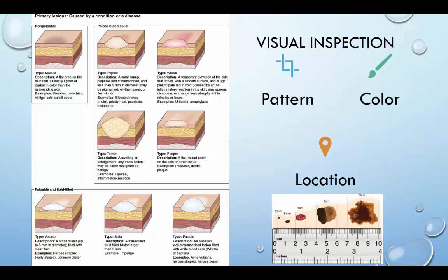We also want to look at the location. Is the lesion above or below the hairline on the scalp, or on or near the genitals or the mouth? Sometimes similar viruses and bacteria occur in different parts of the body, so determining the location is important. Lesions can be either non-palpable or palpable and solid. An example of a non-palpable lesion would be a macule. A palpable and solid lesion could be a papule, a wheal, a tumor, or even a plaque.